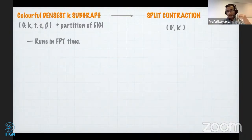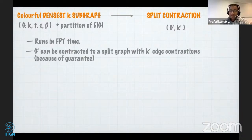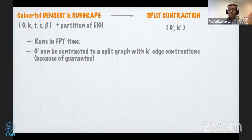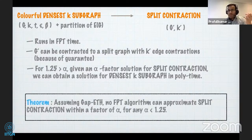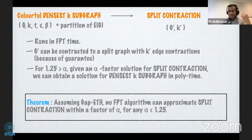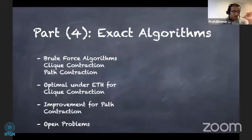Putting this together: there is an FPT algorithm that takes a colorful instance of densest k-subgraph and gives a split contraction instance. We have a handle on the optimum solution for this split contraction because of the guarantee, and the reduction works only for smaller values of alpha. Assuming Gap-ETH, no FPT algorithm can approximate split contraction within a factor of alpha for any alpha smaller than 1.25.